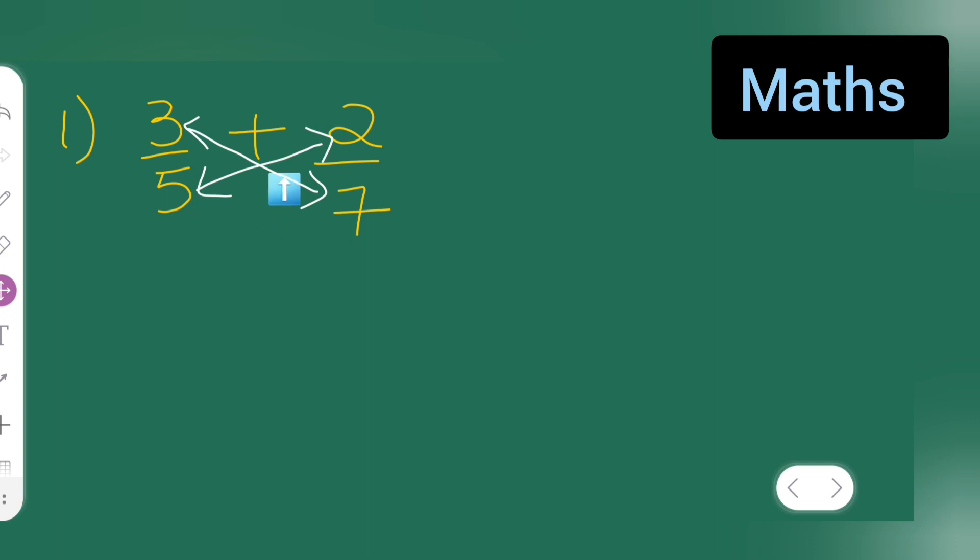So what we need to do is we have to cross multiply. 3 times 7 are 21 plus 5 times 2 are 10 upon, then the denominator 5 times 7 are 35.